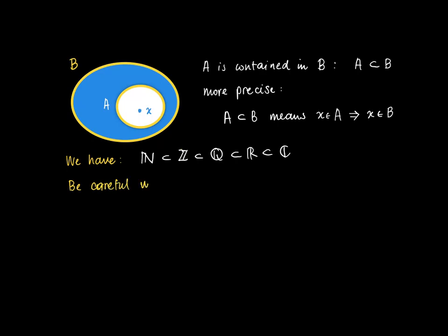What you should be careful with is the implication sign. If x belongs to A implies x belongs to B, the implication sign has a very specific meaning. It's a logical construct.